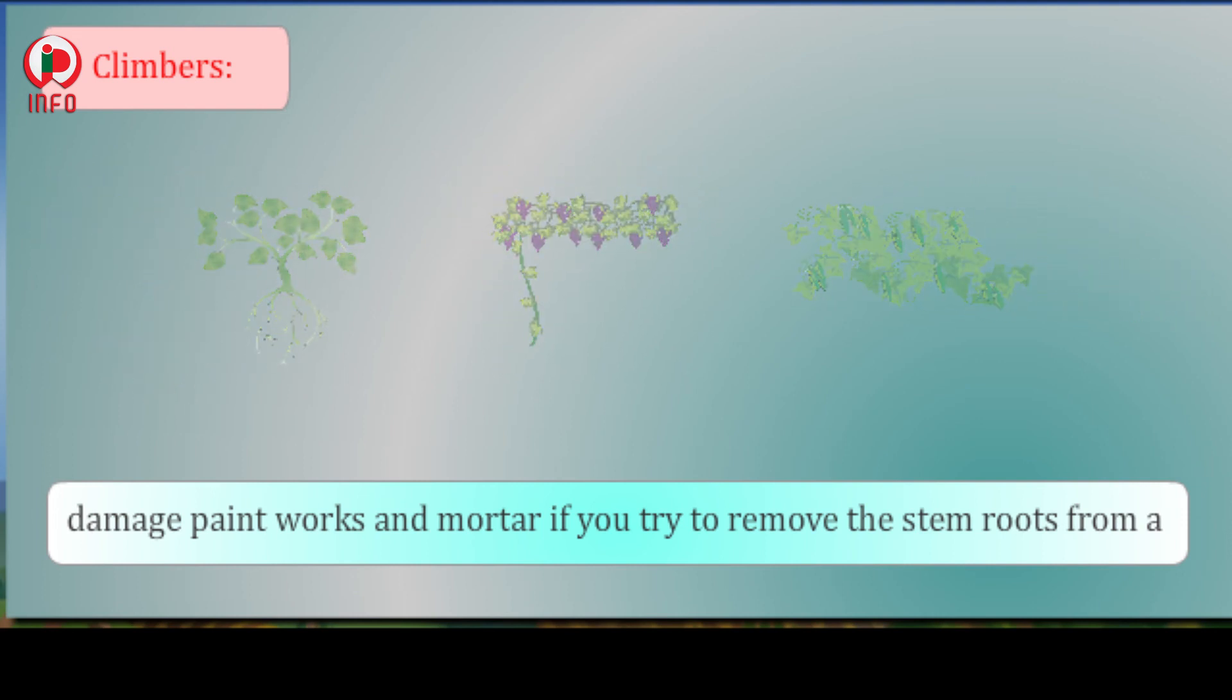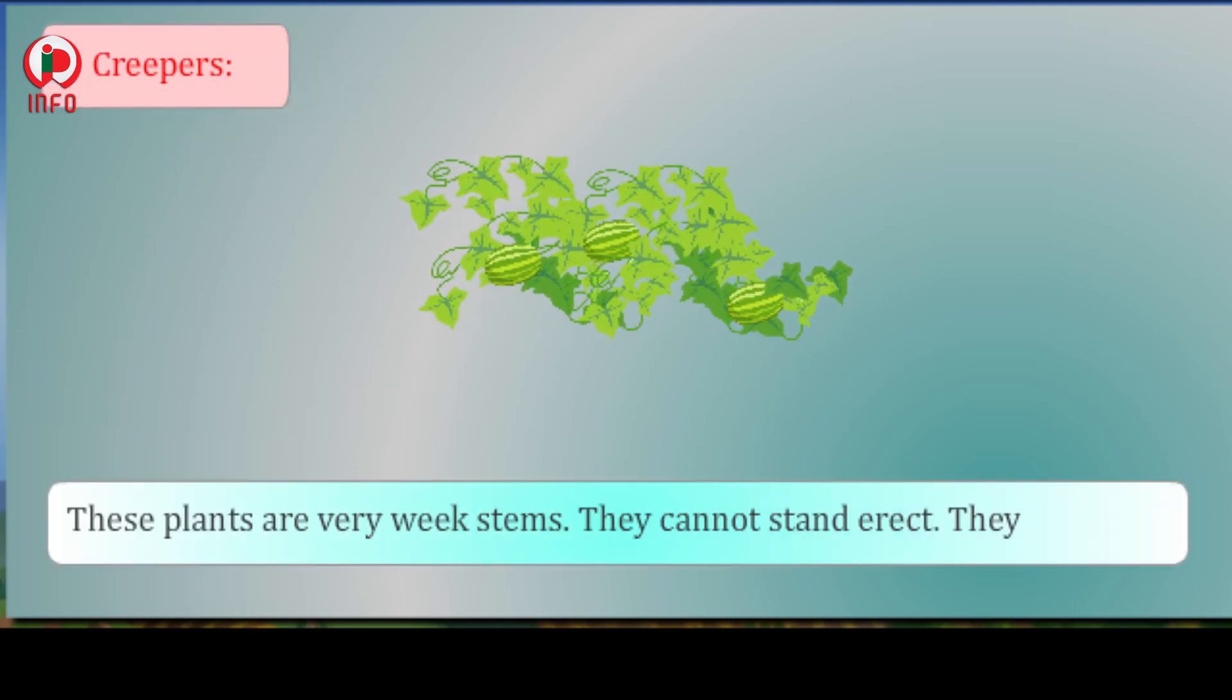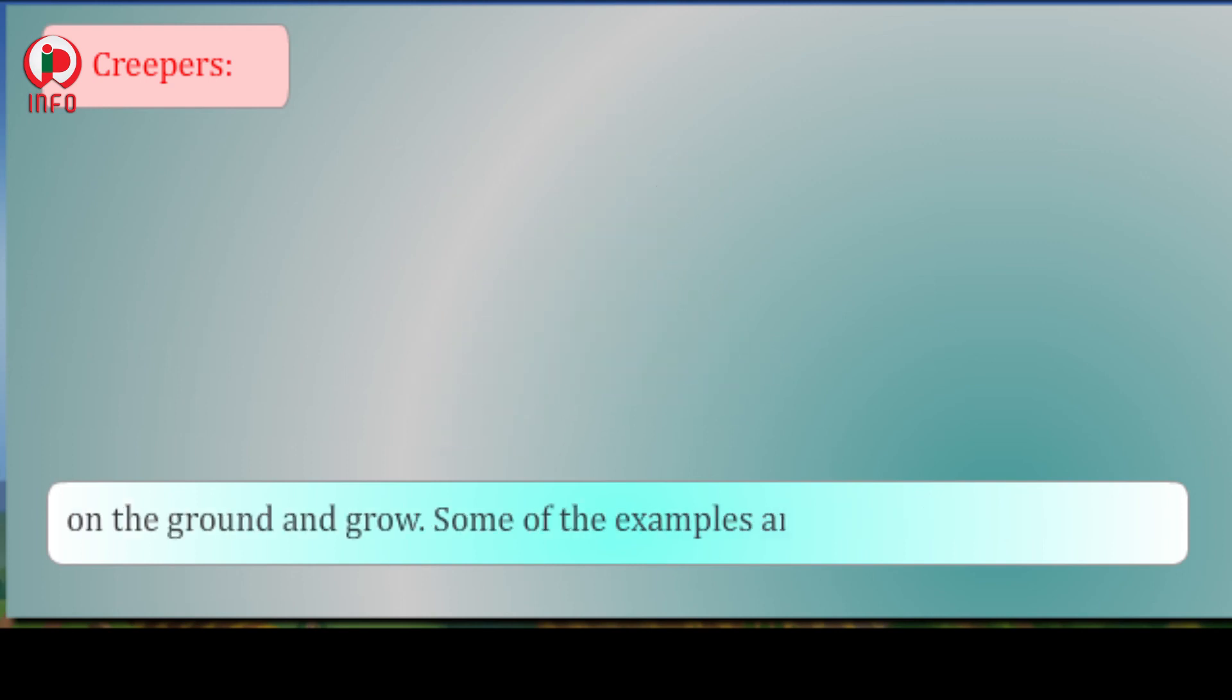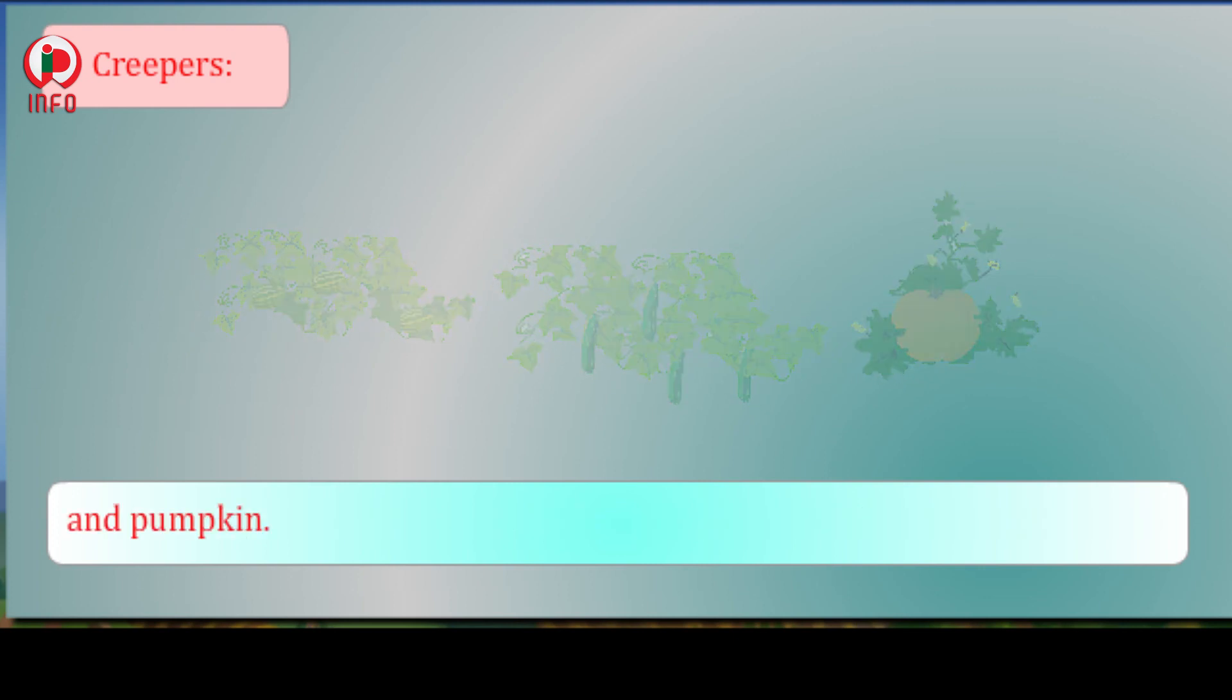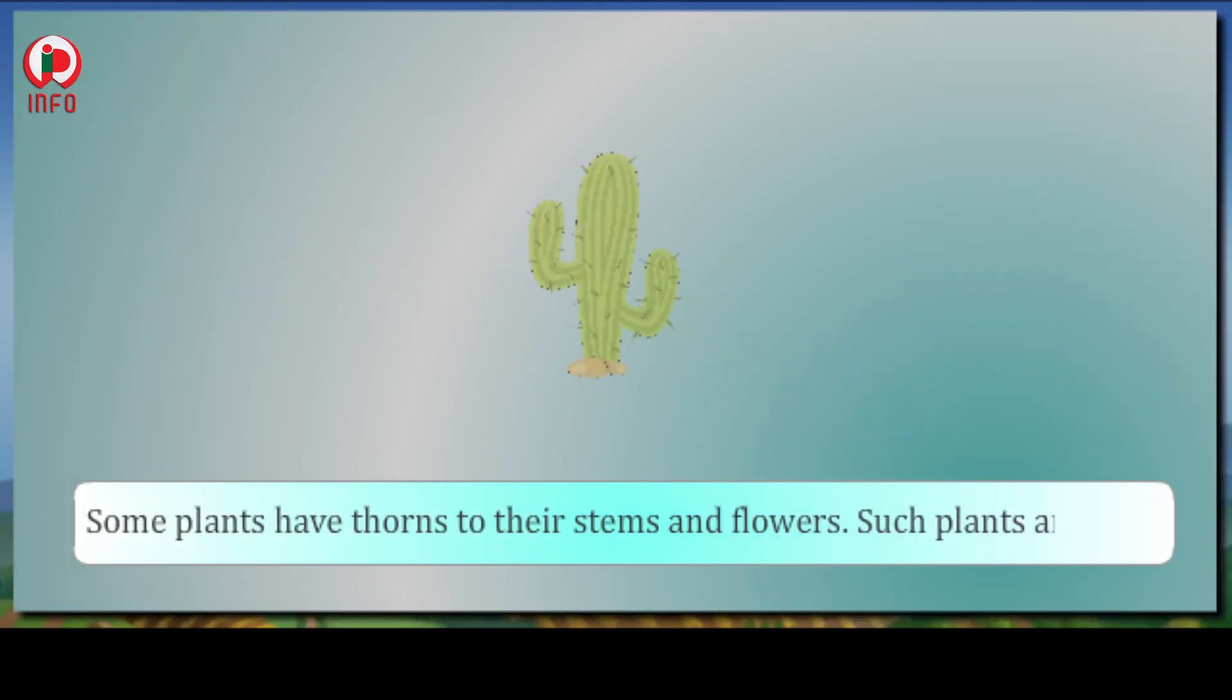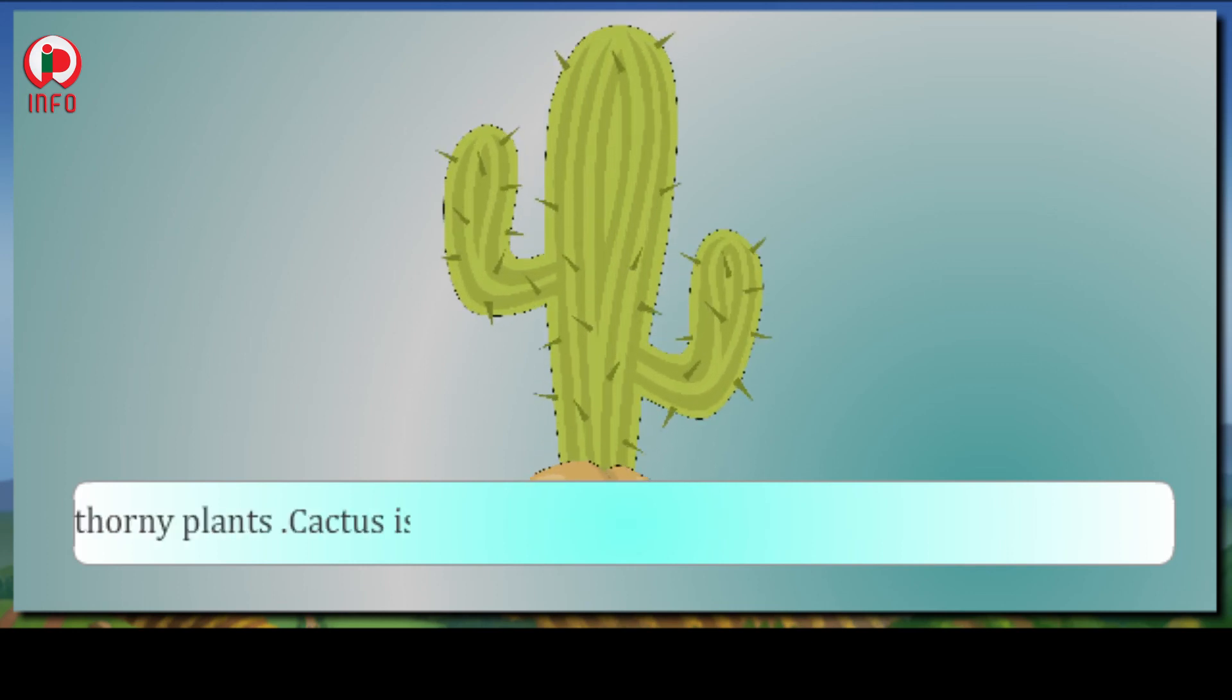Creepers: These plants have very weak stems. They cannot stand erect. They spread on the ground and grow. Some examples are watermelon, cucumber, and pumpkin. Some plants have thorns on their stems and flowers. Such plants are called thorny plants. Cactus is a desert plant and has no leaves but has thorns on its body. Examples: rose, cactus, and lemon.